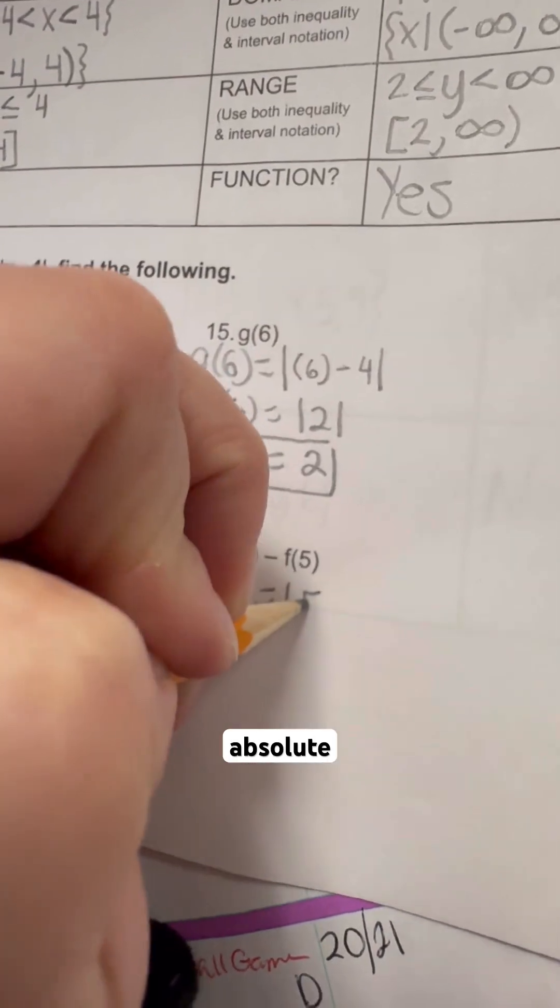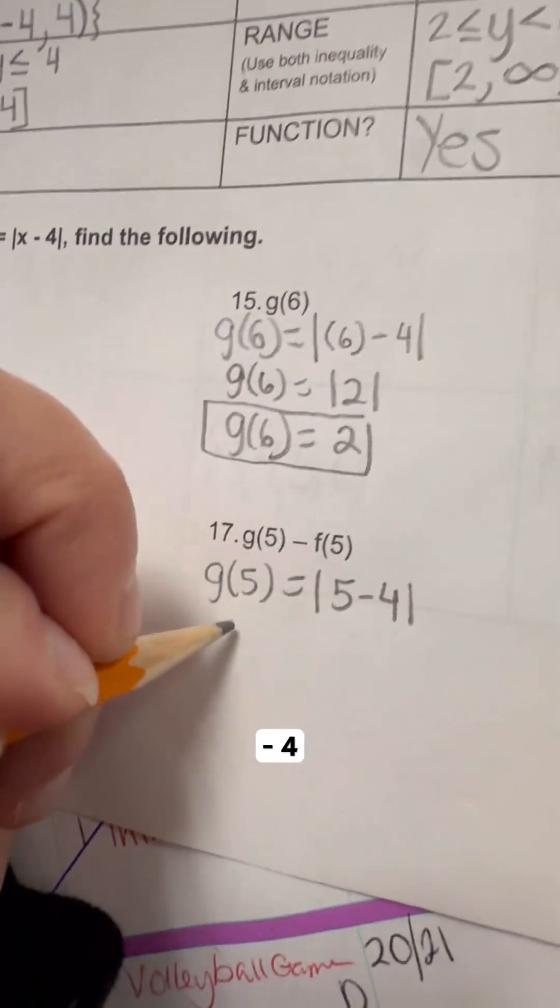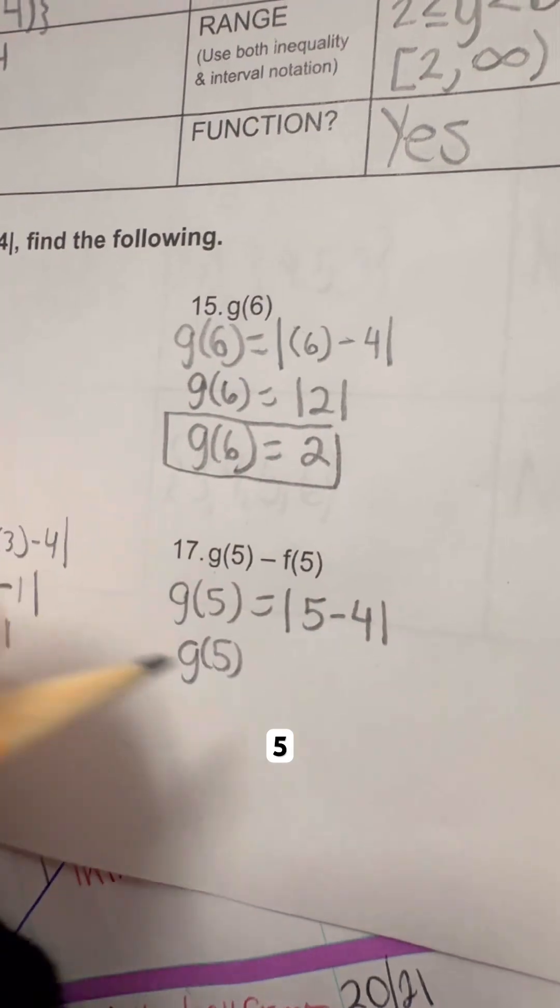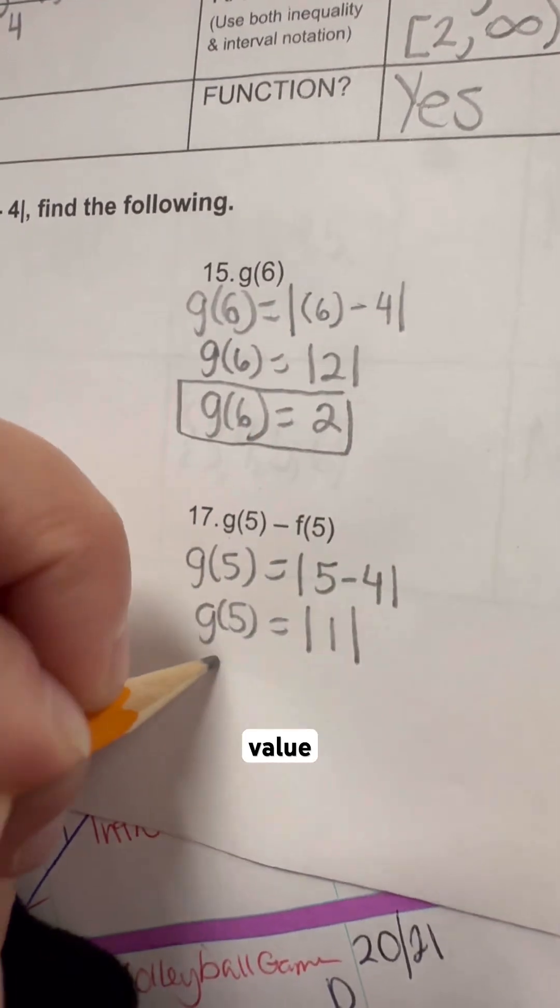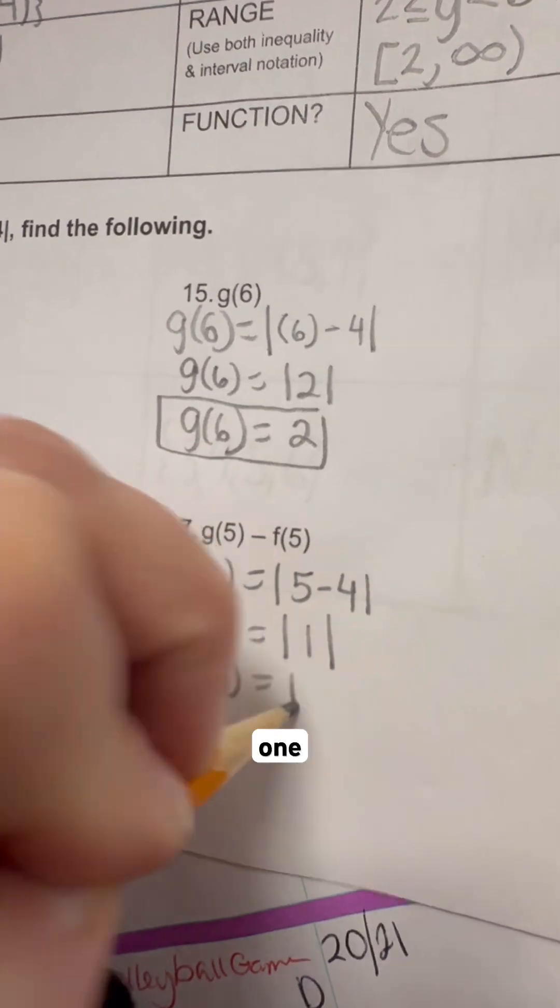So this is going to be absolute value of 5 minus 4. So g of 5 is going to be equal to 5 minus 4, which is 1. So the absolute value of 1 is just going to be 1.